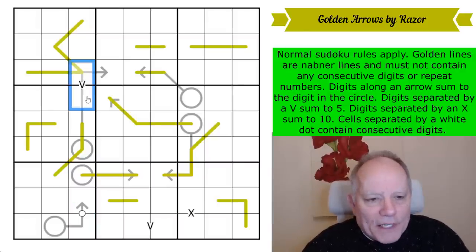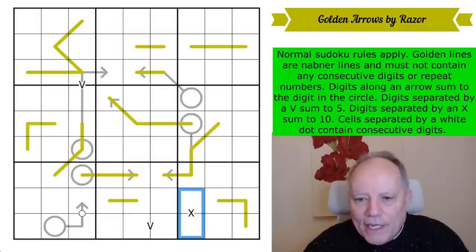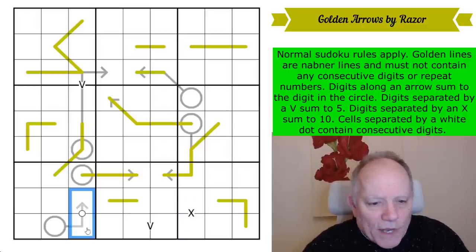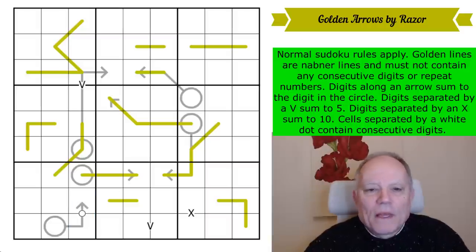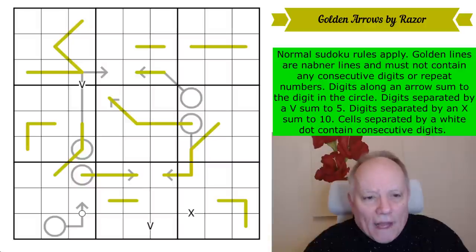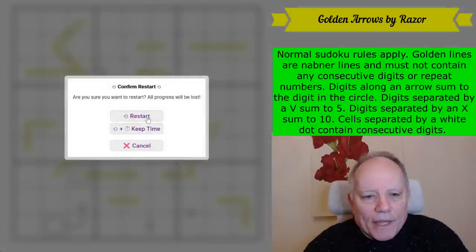You can see from the arrow tips where there are arrows. There is an arrow there, there is an arrow there. That's perhaps the most hidden one somehow. There's one there, there, there, and obviously the one that is exposed there. Digits separated by a V sum to five. Digits separated by an X sum to ten. There's a white dot as well - consecutive digits on that. That's it. Give it a try if you fancy it. It's meant to be not all that hard, but that might be a self-assessment by Razor. Let's get cracking.